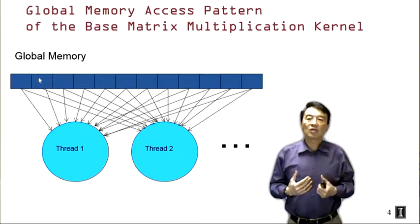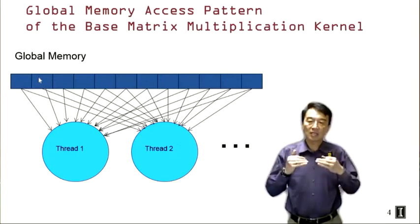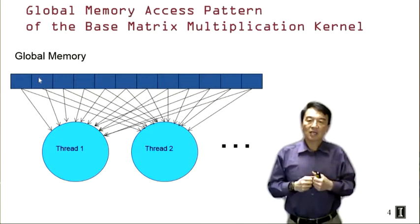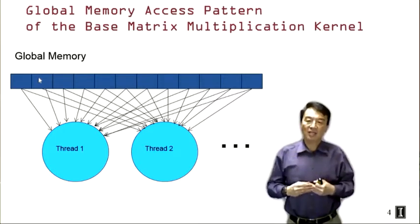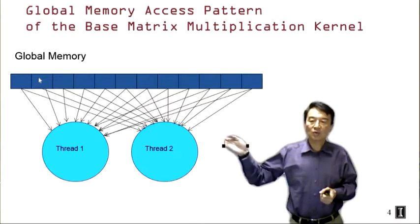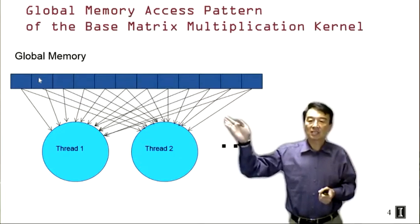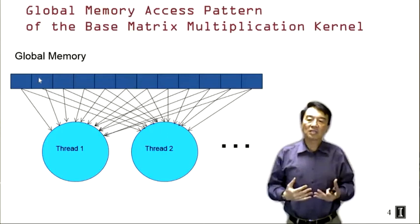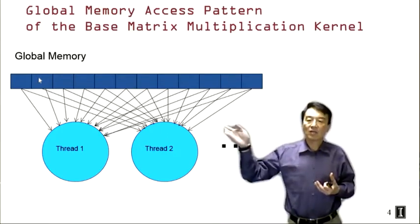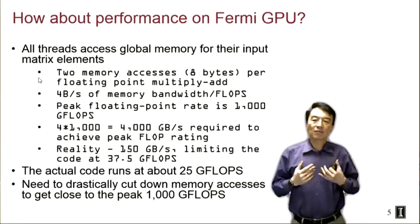If we summarize the access pattern of that kernel: thread one and thread two are both in the same thread block. If they both access the same row of A, thread one will be doing all these accesses shown by the arrows going from memory locations into thread one, and thread two will also be accessing global memory. So we have a lot of redundant memory accesses from the same memory locations into both threads.